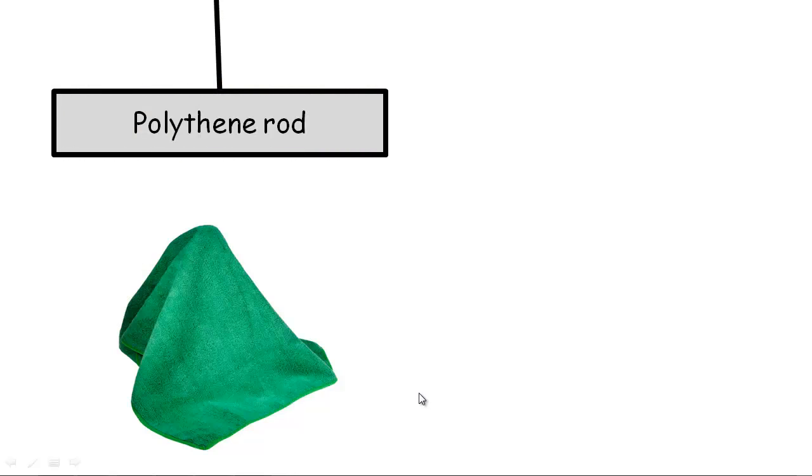OK, so an experiment you'd probably be asked to do in the classroom would be you take a polythene rod, you rub it with a cloth, and then it gets this magical property, the ability to pick up paper or do all these weird things. And when people first started doing this kind of stuff, they had to think of a name for it. So what's happened to the rod? It's suddenly gained these magical powers.